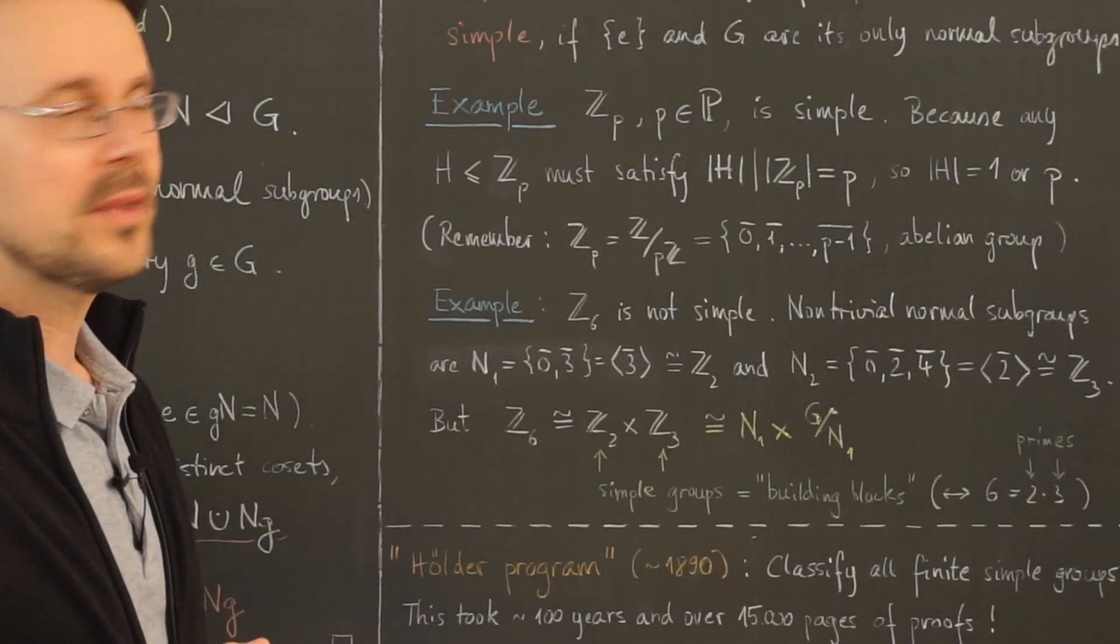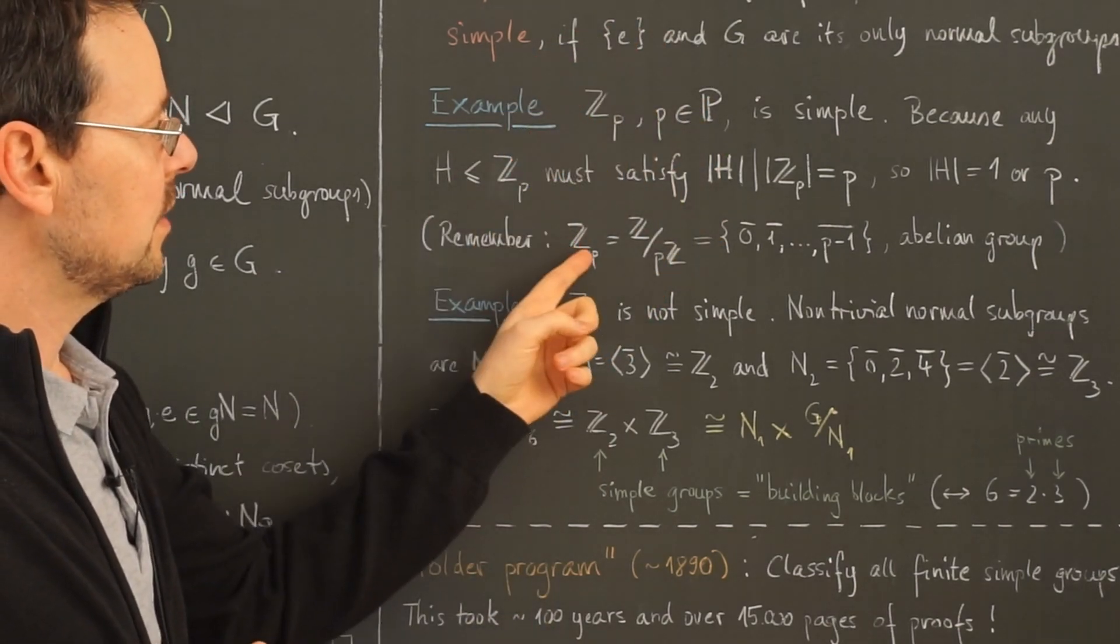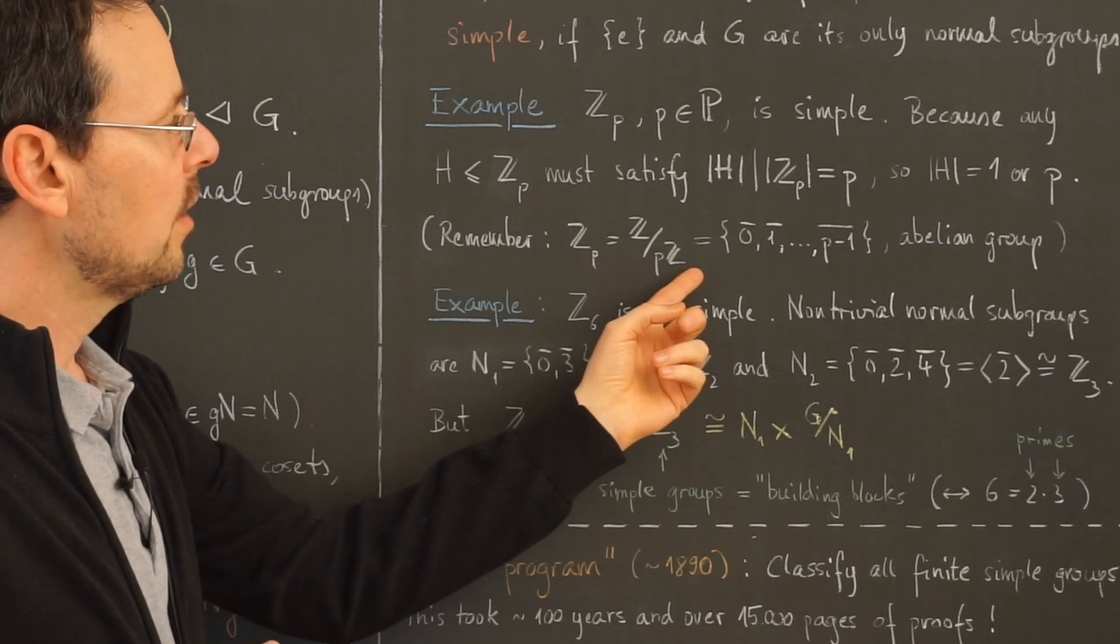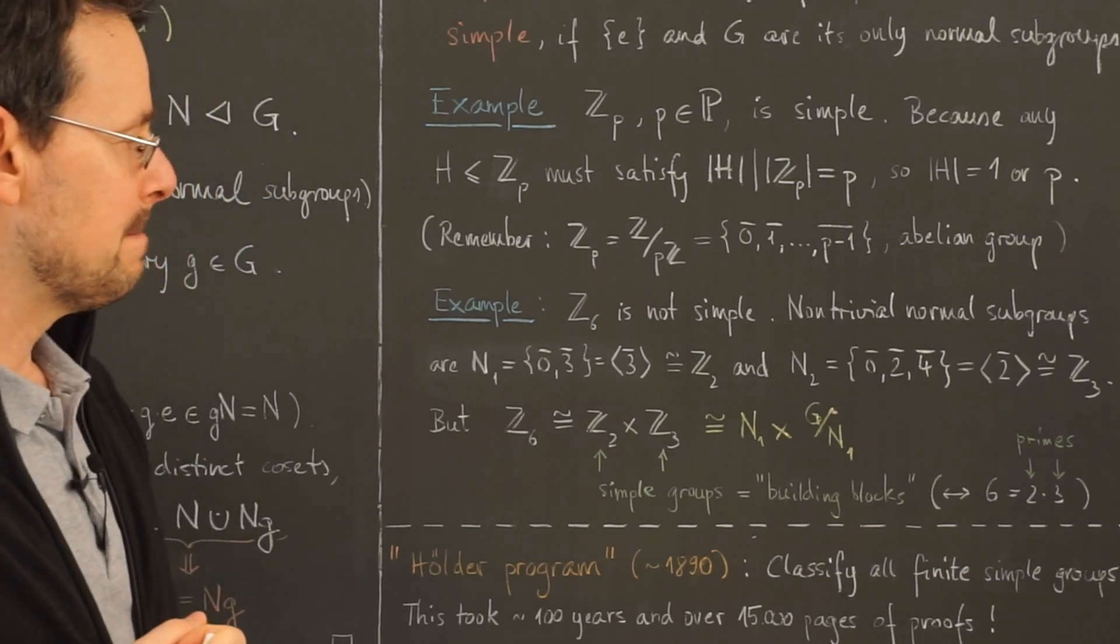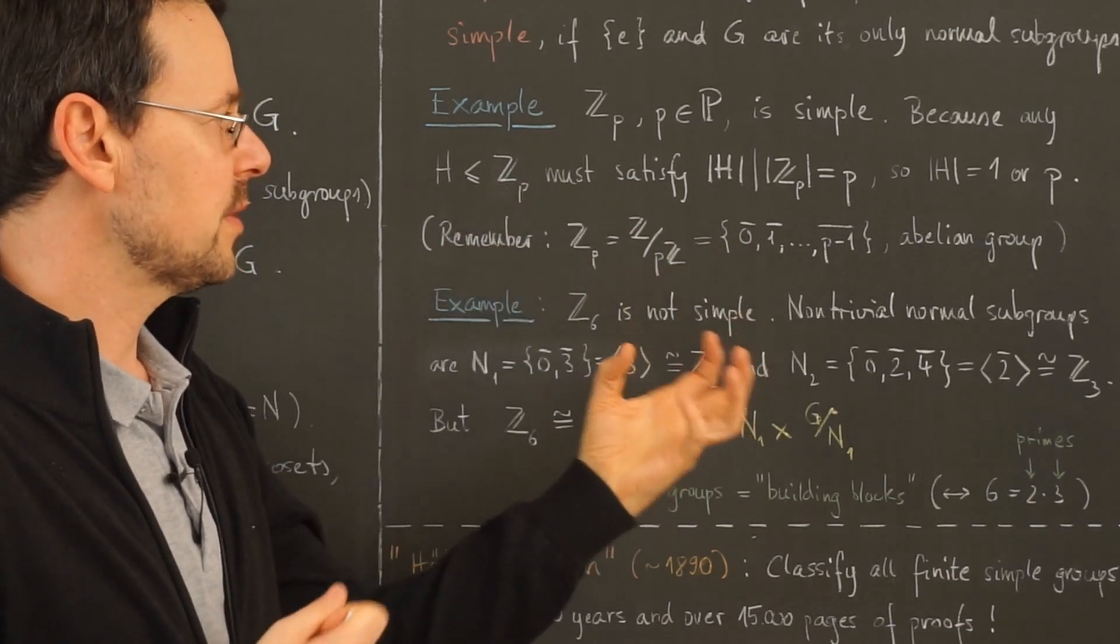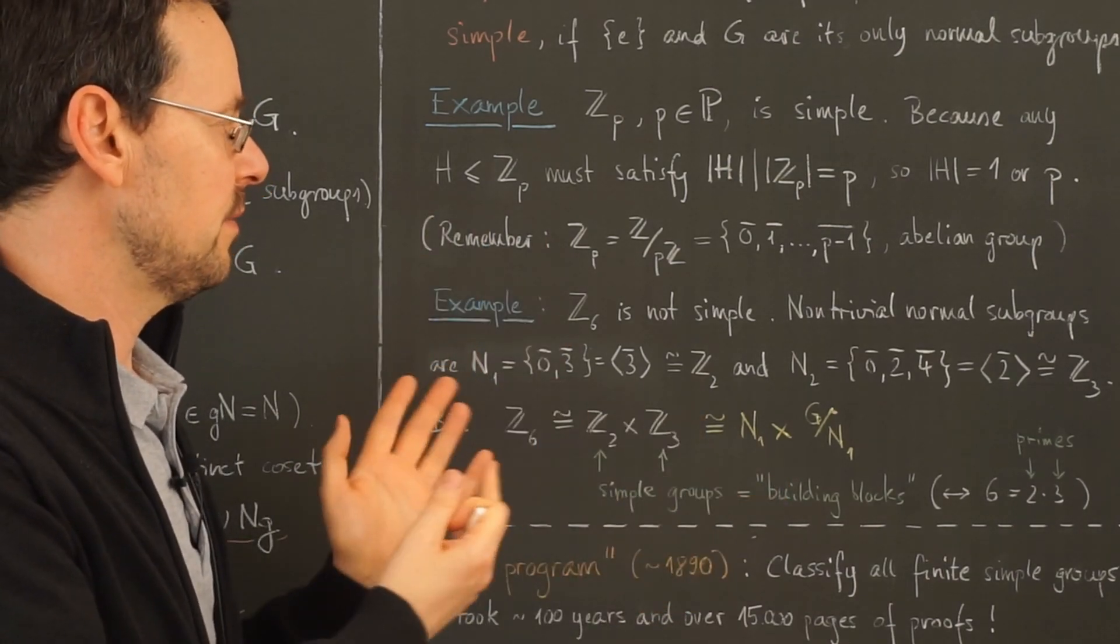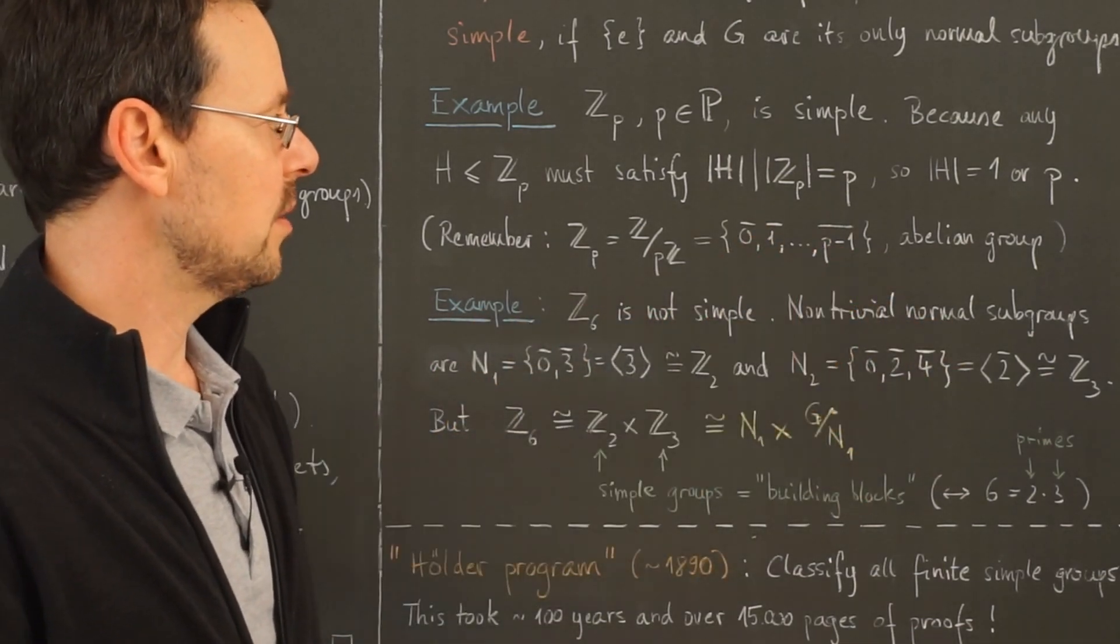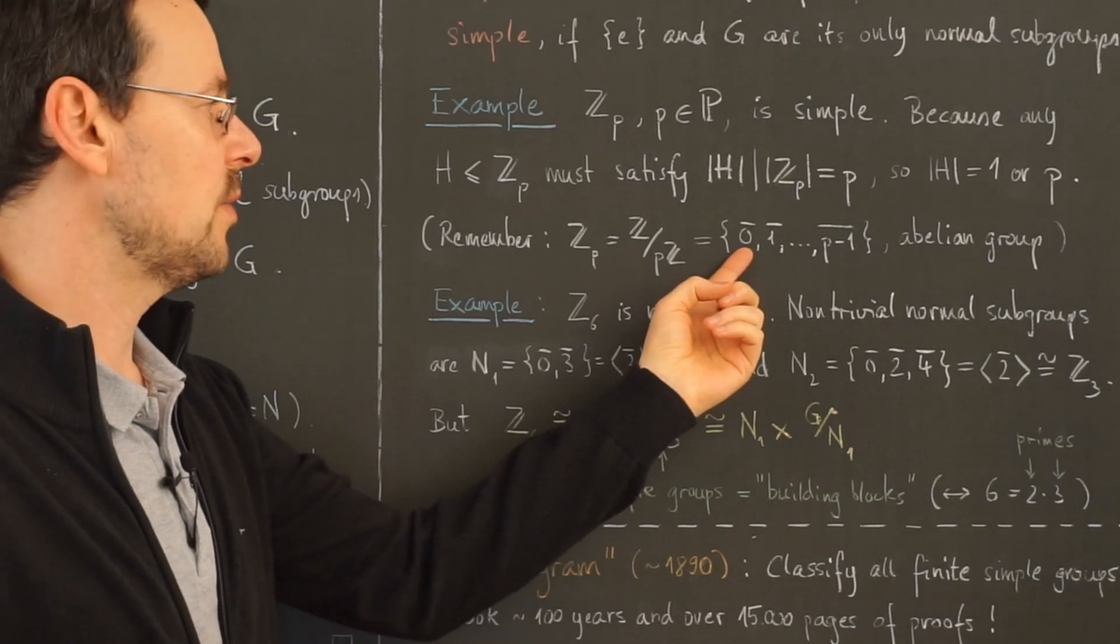So a very important class of examples for simple groups are these guys here. Remember Z sub p is Z modulo p, which is here this group consisting of p different residue classes mod p, 0 bar, so all the numbers that are equivalent to 0 in the sense that the number minus 0 is divisible by p. So all the multiples of p, 1 bar and so on up until p minus 1 bar. And the residue class p bar for the first time is the same as the residue class of 0 bar.